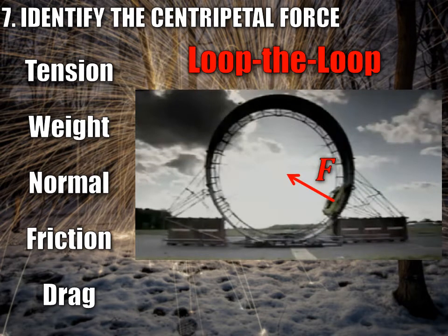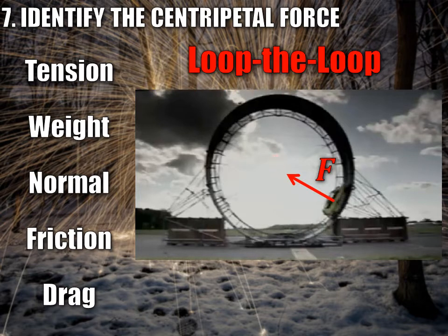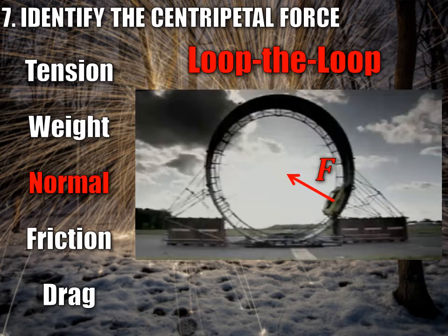When the car was going through the loop, there must have been a force pointing to the center. A lot of people think it's weight, but the weight is pointing down — the weight is not pointing to the center of the circle except at the very top. In this case, the better choice is the normal force. That's not to say friction isn't providing any centripetal force, but the normal force is the larger source — it's constantly there. The track is what's causing it to move in the circle; if you took away the track, the car would not move in a circle.